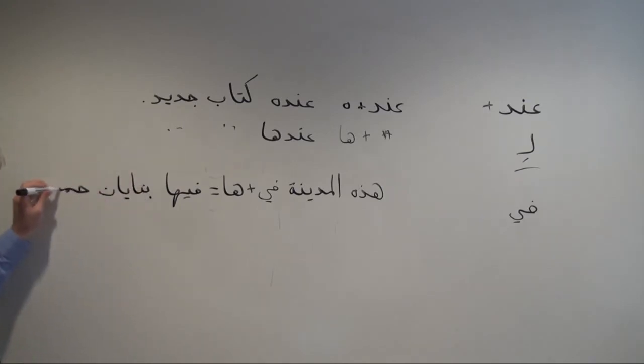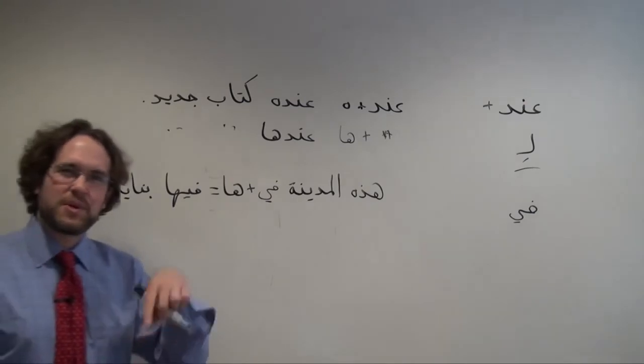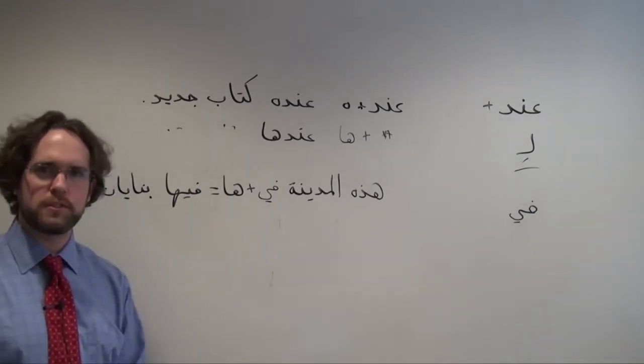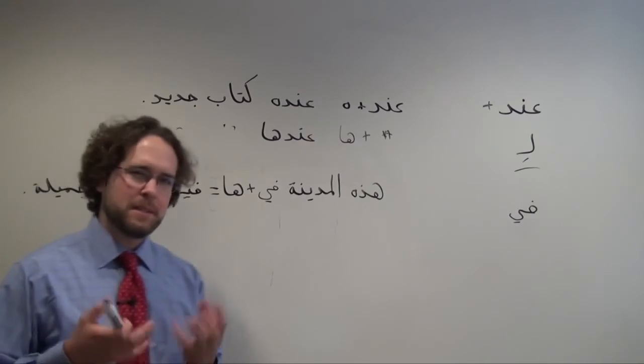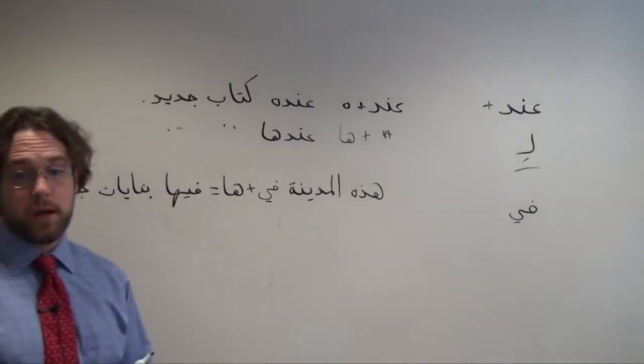فيها بنيات جميلة, right? Literally in it, or at it. At this city are beautiful buildings, right? But I can't use عند because a city is not a person.